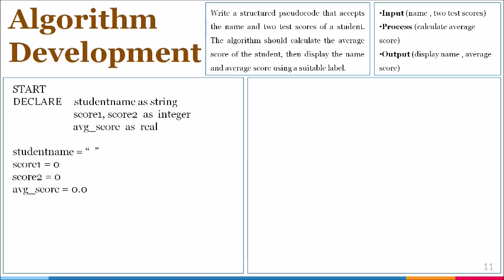After our initialization phase, we need to prompt for our entry. Using the three key areas that we separated our problem statement in earlier, we always prompt for what is in the input section. So we're going to be prompting for the name of the student, as well as the two test scores for the student.